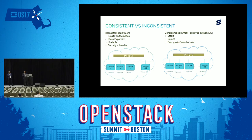For example, if there is an issue observed in a particular compute and the fix is implemented only in that particular compute, then that compute will be at a different version and the rest of the computes deployed will be at a different version. That can cause the inconsistency.